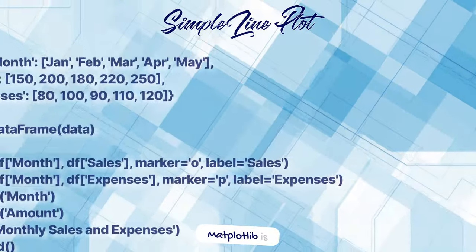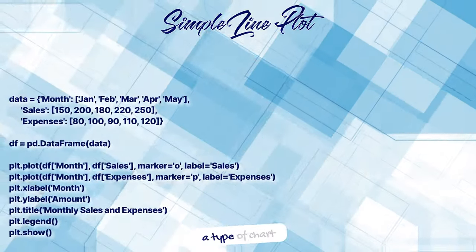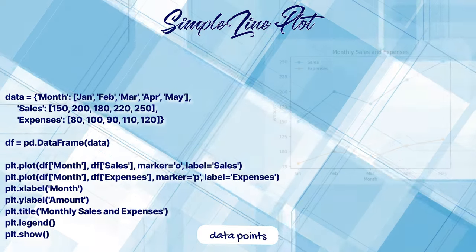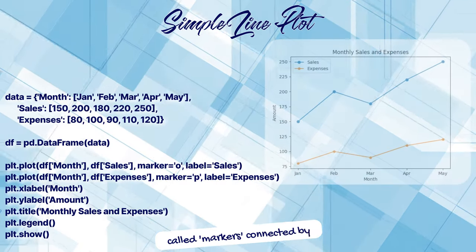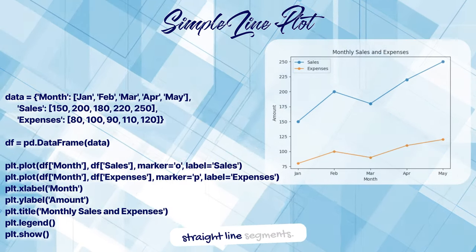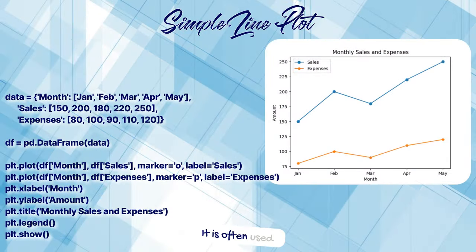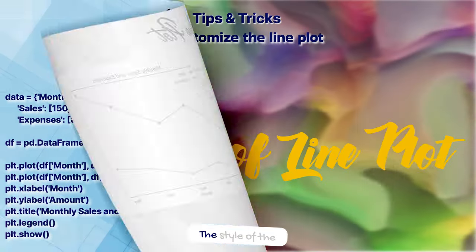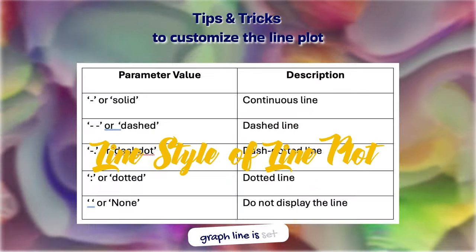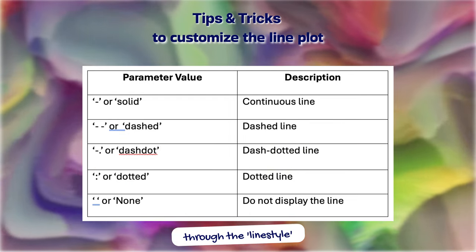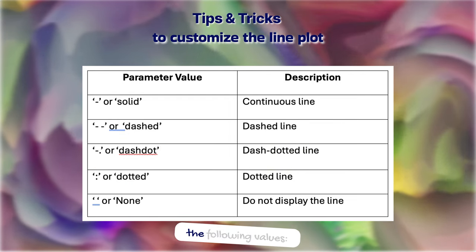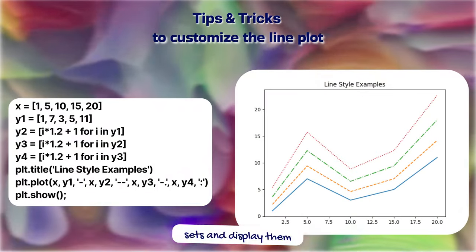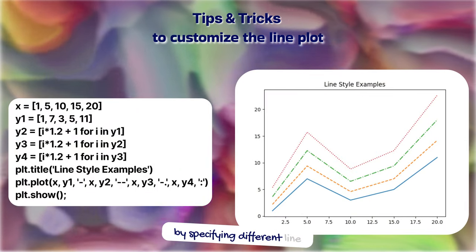A line plot in Matplotlib is a type of chart used to display information as a series of data points, called markers, connected by straight line segments. It is often used to visualize trends over time or continuous data. The style of the graph line is set through the line style parameter, which can take the following values. Let's build several datasets and display them by specifying different line styles.